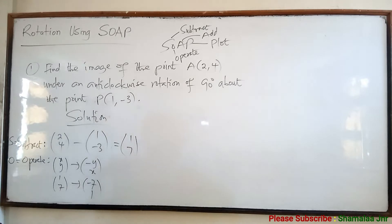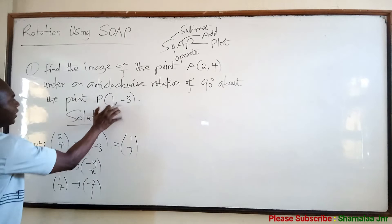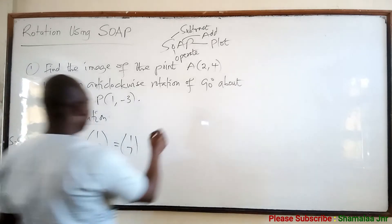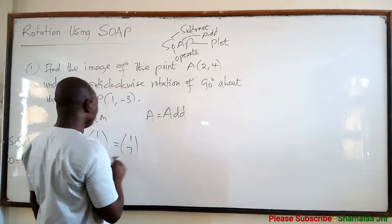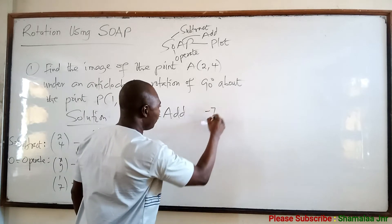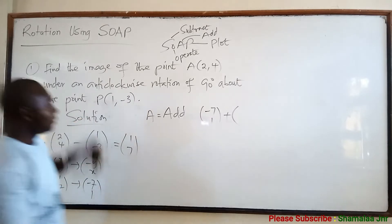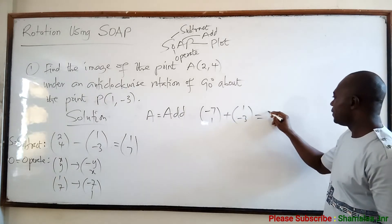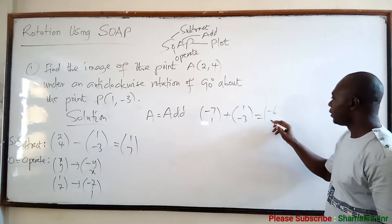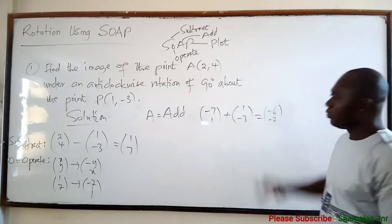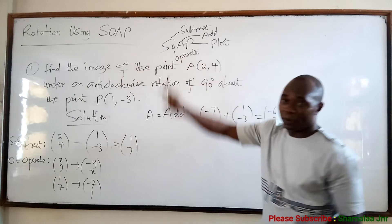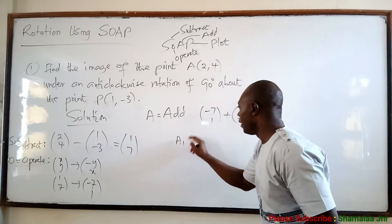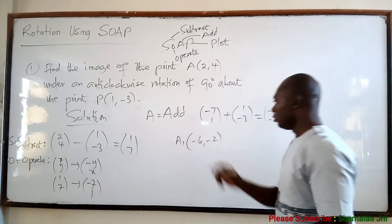The next step is A — Add. We are going to add this result to point P. So we have (-7, 1) plus (1, -3). This gives: -7 plus 1 is -6, and 1 plus (-3) is -2. So we get the point (-6, -2). This means that if A' is the image of A, then A' has coordinates (-6, -2).